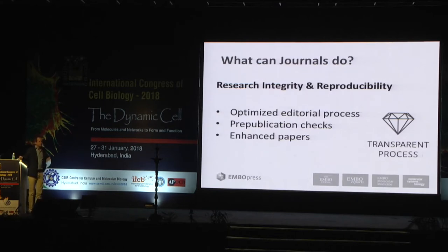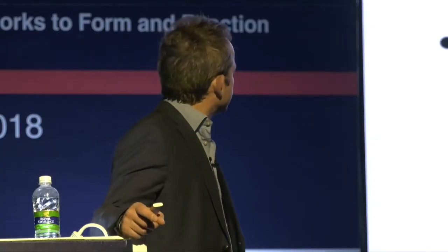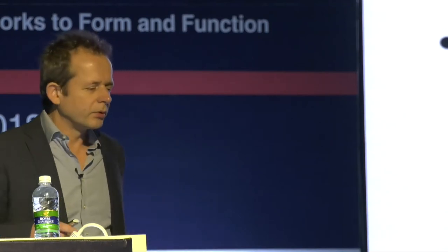What can journals do to prevent this sort of thing? The retraction took far too long — we have to move faster. We also have to improve things more systemically. I'm going to show you a couple of things we've done at EMBO publications to improve the editorial process. We also need a more robust way to check information before we publish it, beyond peer review itself. And we have to find ways to publish better papers in a more modern way.